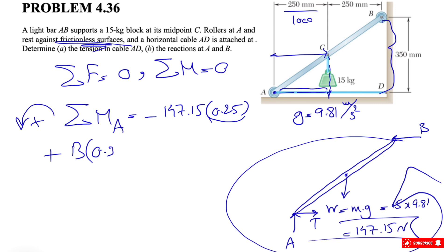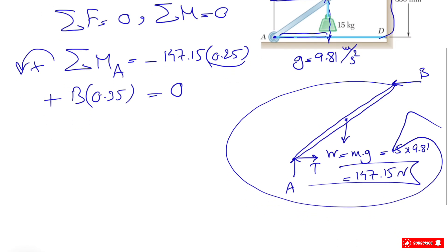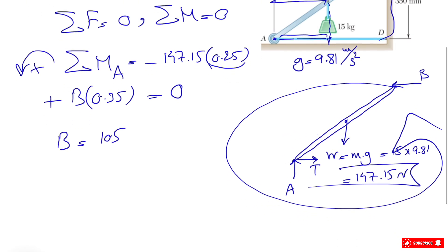But since we did this one in meters, we have to do the same thing for here. Again, there is no need for unit conversion. So we only have one unknown and we can find B, which will be 105.1 Newtons. The direction that we assumed at the beginning was correct, and it has to be to the left.